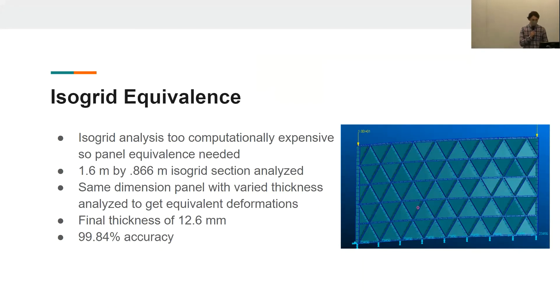Before any actual analysis in PATRAN and NASTRAN can be completed, an isogrid equivalence needs to be reached, because the isogrid as it sits now is way too computationally expensive to actually run. The way this equivalence was achieved was by running a 1.6 meter by 0.866 meter isogrid section. This is 8 isogrid triangles long and 5 isogrid triangles high, and this was run through PATRAN. Then a panel of the same dimension with varied thicknesses was run in PATRAN and analyzed, and these two things were compared with the panel having varied thicknesses until an equivalent deformation was achieved between the two panels.